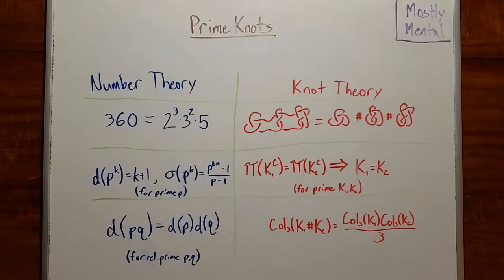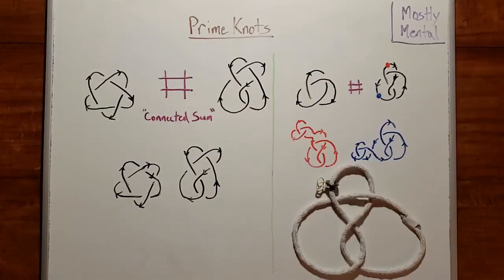So today, I'd like to talk about prime knots. Prime numbers are most meaningful when we have a way to combine them, namely multiplication. And similarly, before we can talk about prime knots, we first need a way to combine knots.